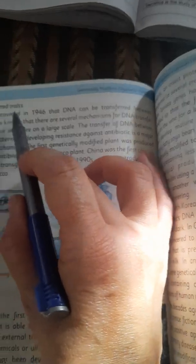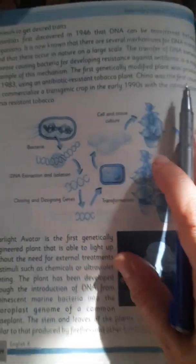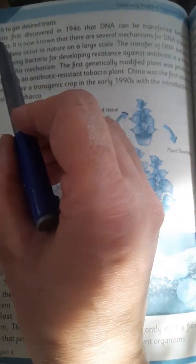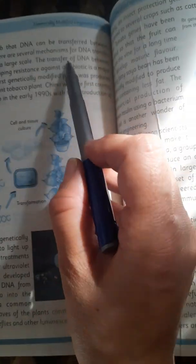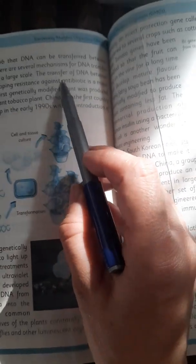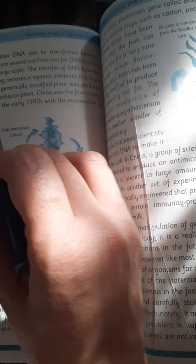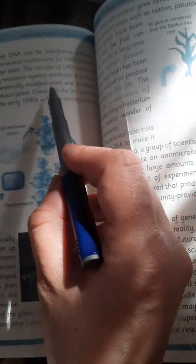To get desired traits, changes in their traits are made as per choice. Scientists first discovered in 1946 that DNA can be transformed between organisms. It is now known that there are several mechanisms of DNA transfer and that these occur in nature on a large scale. The transfer of DNA between disease-causing bacteria for developing resistance against antibiotics is a major example of this mechanism.